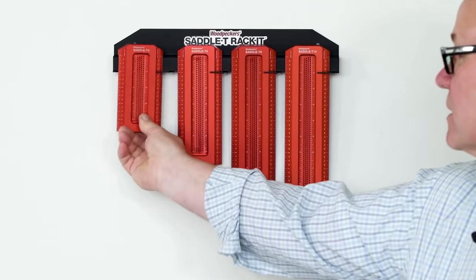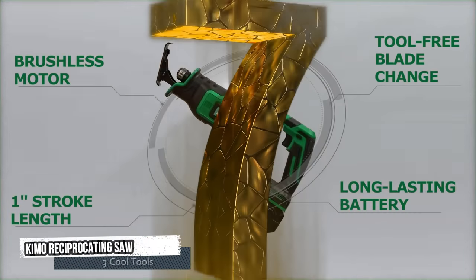This will make board marking a cakewalk for you. Seventh Tool: Kimo Reciprocating Saw.